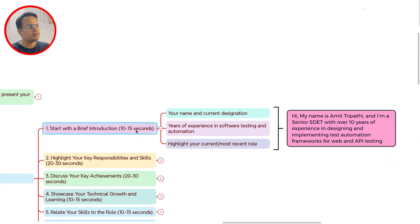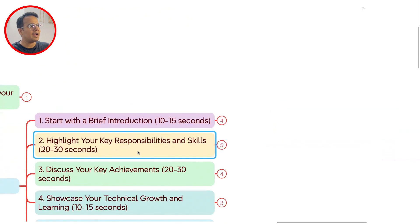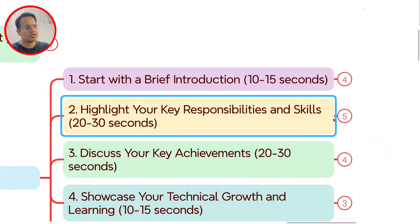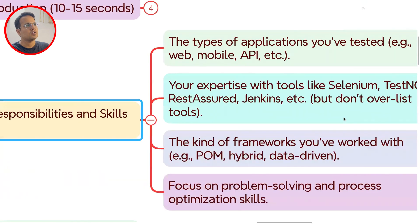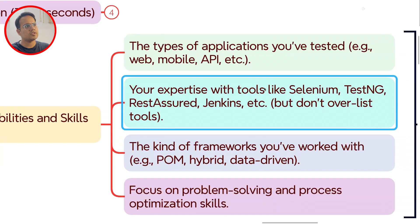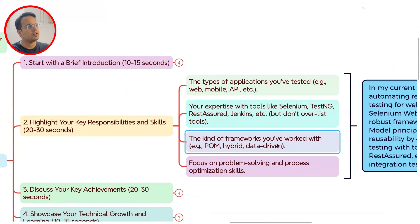Second, highlight your key responsibilities and skills in 10 to 30 seconds. Focus on the tools and technologies you have worked with, what type of applications you have tested — whether web, mobile, API, or others — and your expertise with tools like Selenium, TestNG, RestAssured, Jenkins, etc. Keep in mind you don't have to tell a lot of things; it has to be a quick explanation of the different tools and technologies you've worked with.